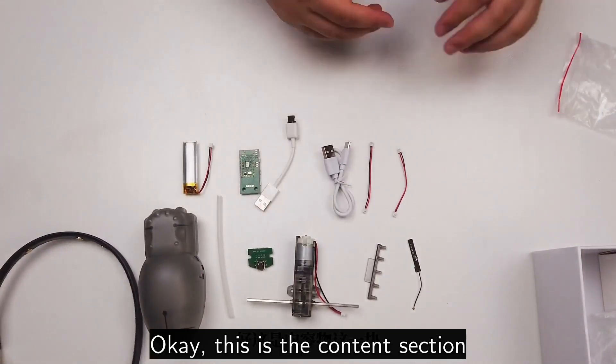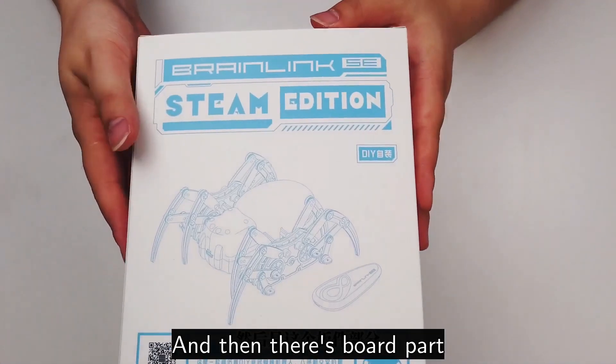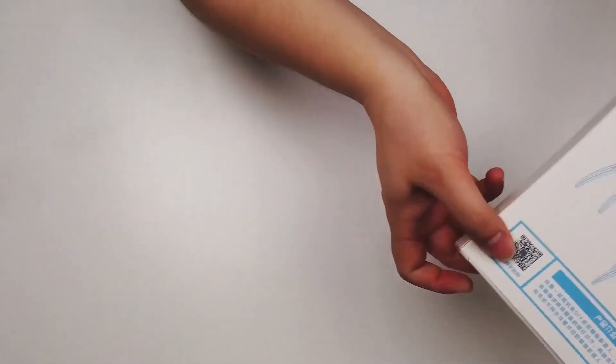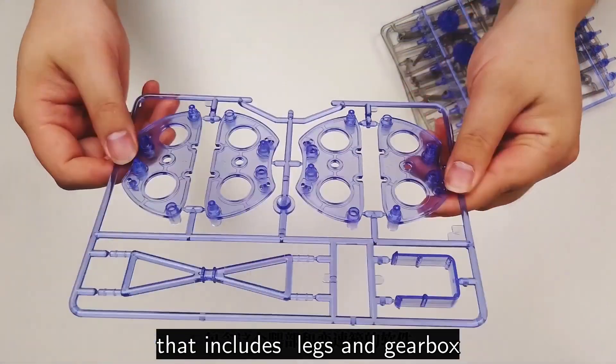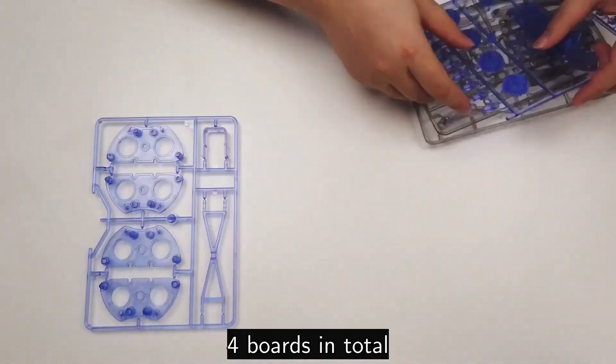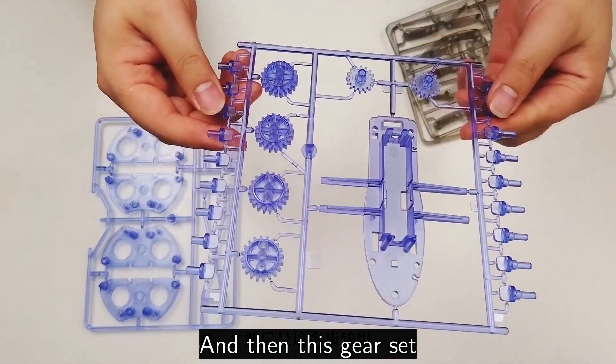There is also a switch component, switch assembly circuit board. It includes a charging port and a switch. This is the content section, and then there's the board part, which includes legs and gearbox - four boards in total, and then this gear set.